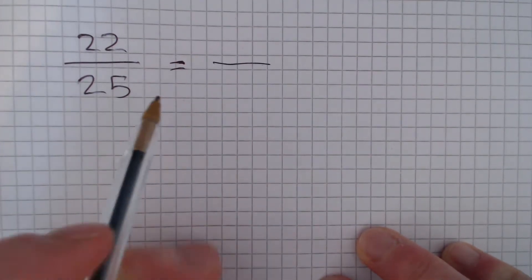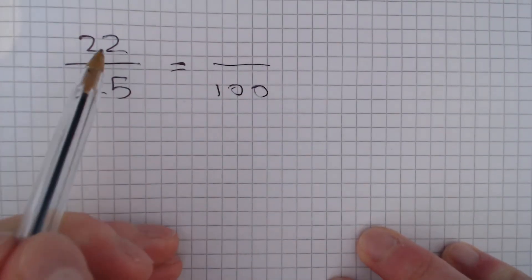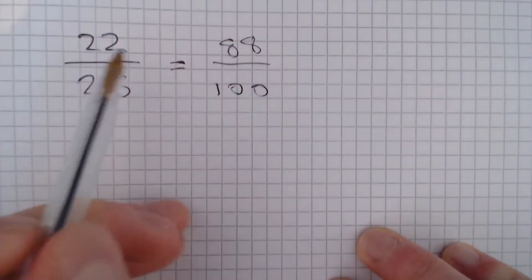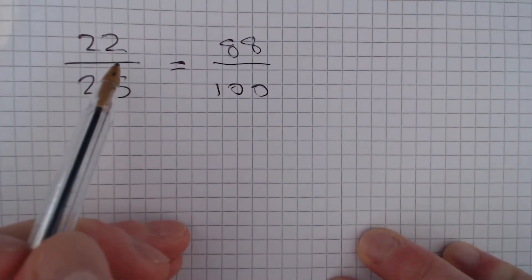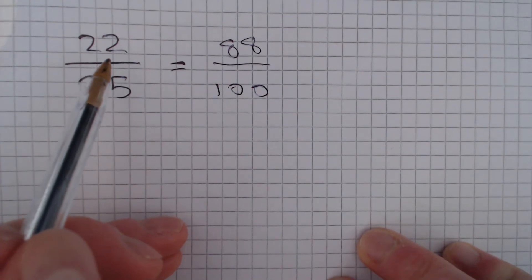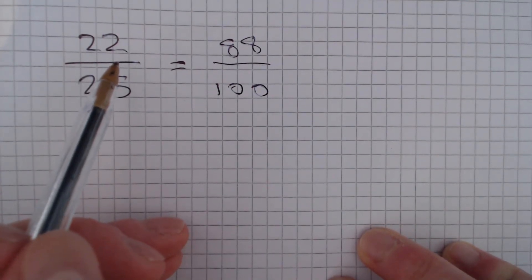So 25 multiplied by 4 gives us 100. And 22 multiplied by 4 gives us 88. Remember that multiplying by 4 is the same as multiplying by 2 twice. So we get 22 times 2 is 44, times 2 again gives us 88.